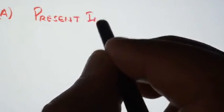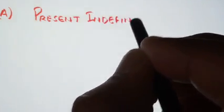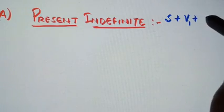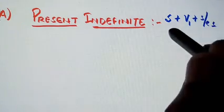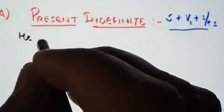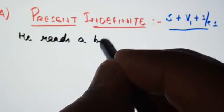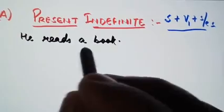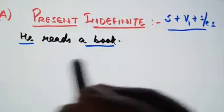We will try to understand this with the help of examples. First of all, we will take up the first tense — present tense. We all know that the rule for present indefinite tense is: subject plus first form of the verb plus 's' or 'es'. So we will take an example: 'He reads a book.'